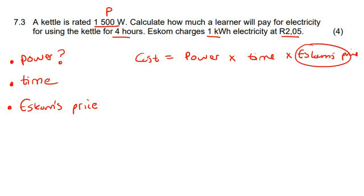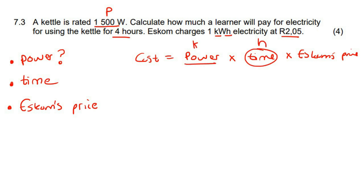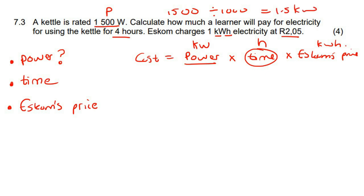You might be saying: isn't Eskom's price the cost? No — this is Eskom's price per one kilowatt hour, that's just their unit price. What's important is that Eskom quotes us in kilowatts and hours, so the time must be in hours and the power must be in kilowatts. We need to convert 1,500 watts to kilowatts by dividing by 1,000, which gives us 1.5 kilowatts.